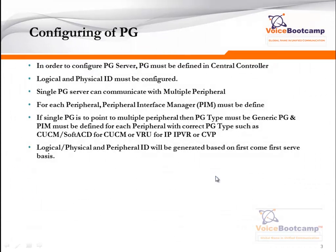To configure PG, we need to define PG parameters in the central controller, such as what is going to be my logical ID and what is going to be my physical ID. Those IDs are generated automatically upon saving the PG settings. If a single PG is to point to multiple peripherals — such as one connecting to Call Manager and CVP — then the PG type must be set as a generic PG. A PIM must be defined for each peripheral with the correct PG type, such as CUCM, soft ACD for Call Manager, VRU for IVR, or CVP. A logical and physical peripheral ID will be generated on a first-come, first-serve basis.